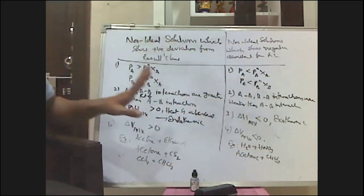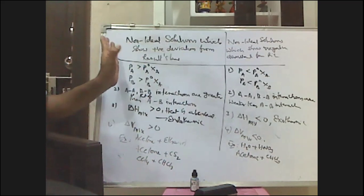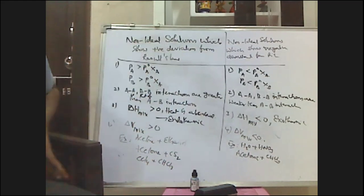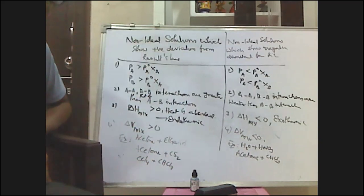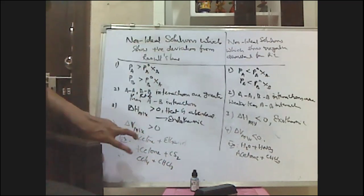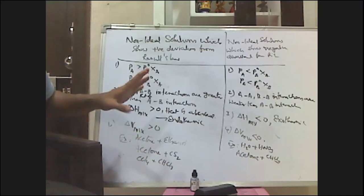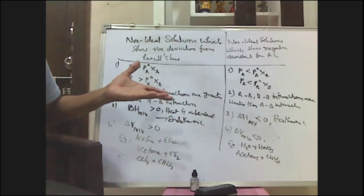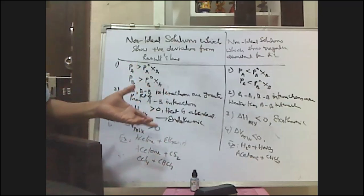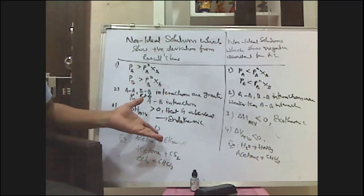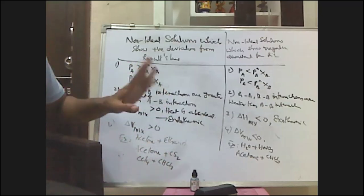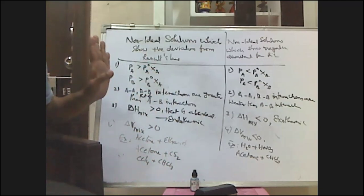For objective exams: in positive deviation, vapor pressures are greater than calculated; in negative deviation, vapor pressures are less than calculated. You can use this to identify which of the following shows positive deviation from Raoult's law.